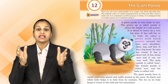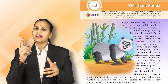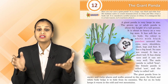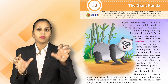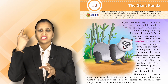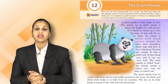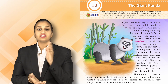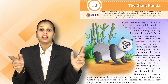Every panda is very big in size — as big as a very big man. It is white with black patches all around it: on its eyes, ears, shoulders, and legs. Patches means some different parts of the body that are a different color.